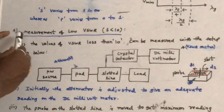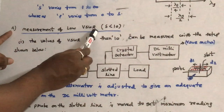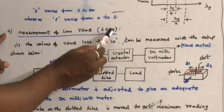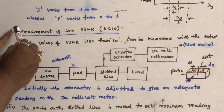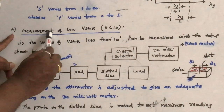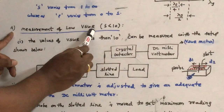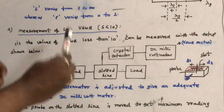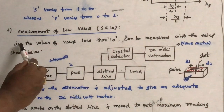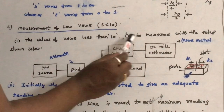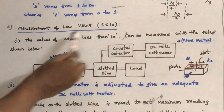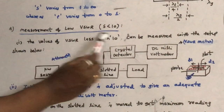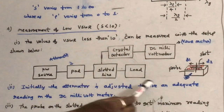There are two cases for measurement. The first is the measurement of low VSWR: if the VSWR is less than 10, we use this method. Values of VSWR less than 10 can be measured with a microwave bench setup as shown — this is the general microwave bench setup used for measurement of low VSWR values.